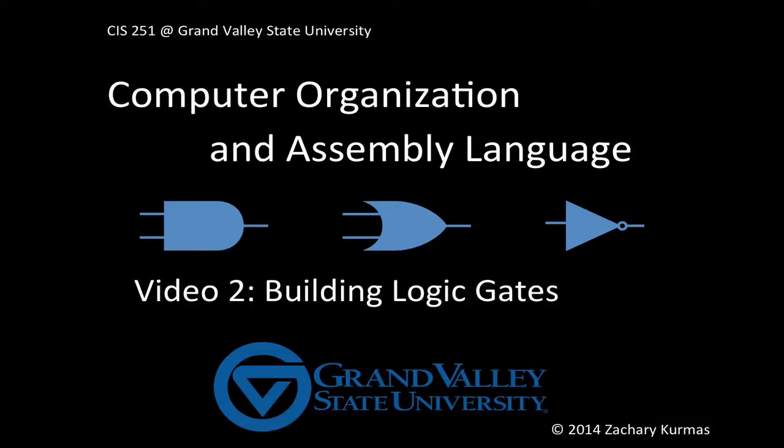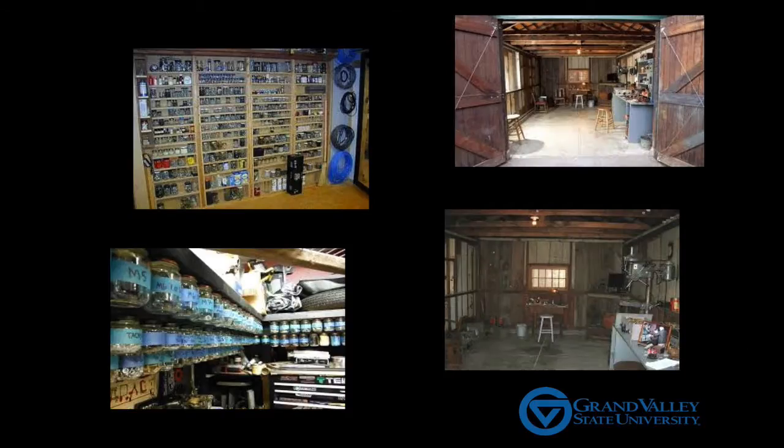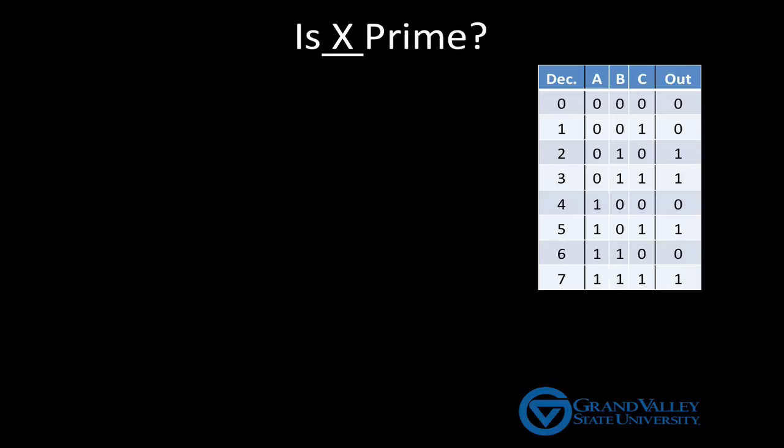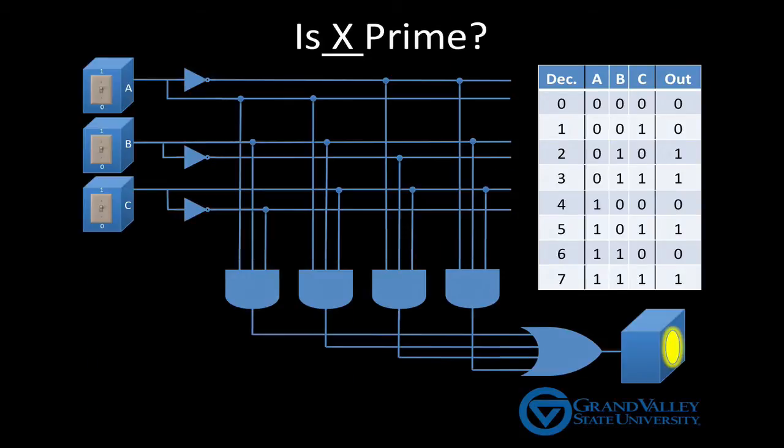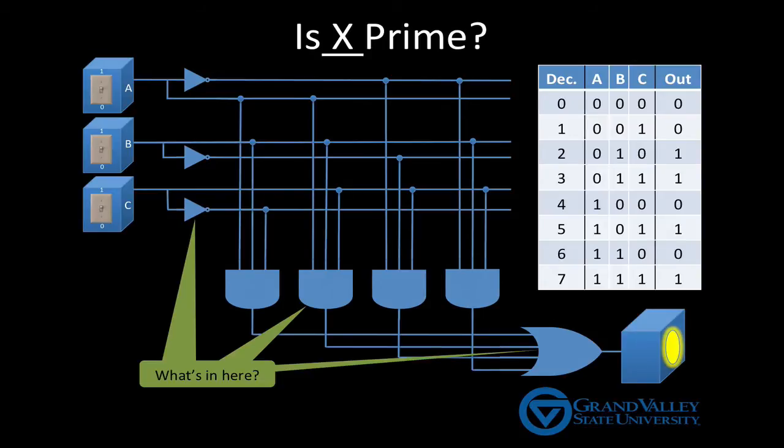In this video, you'll learn how to build logic gates using things you can find around the house. At the beginning of the first video, I promised to show you how to build a computer out of spare parts you might expect to find in your grandfather's garage. I then went on to show how to take a truth table and use AND, OR, and NOT gates to build the combinatorial circuit that implements it. In this video, I'll show you how to build these gates.